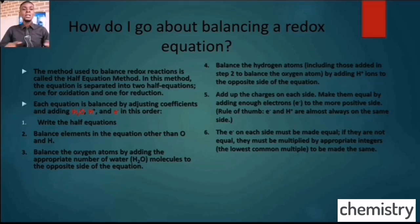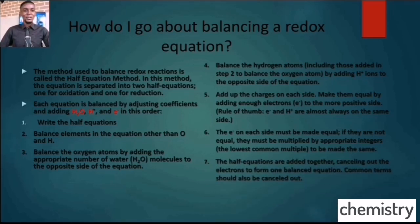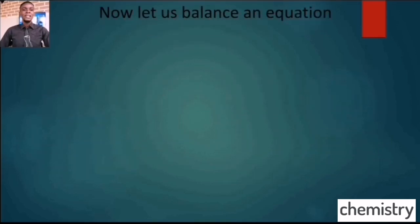Lastly, the electrons on each side must be made equal. If they are not equal they must be multiplied simultaneously. At the end you put the two half equations together and multiply to ensure electrons on both sides are equal. Then the equations are added together, cancelling out electrons. Any common terms — water, hydrogen ion, or electrons — that appear on both sides should also be cancelled out. So let's look at that in examples.